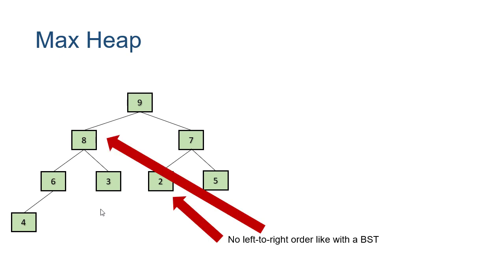In a max heap there's no left-to-right order like we had with a BST. Here you have an eight in the left subtree, but then you have two, five, and seven in the right subtree. Even though eight is bigger than any of those values, there's no ordering left to right — the ordering is entirely top to bottom, and that's perfectly acceptable.